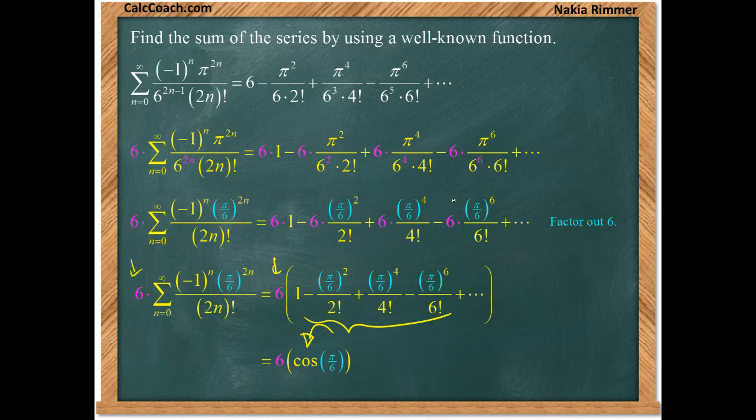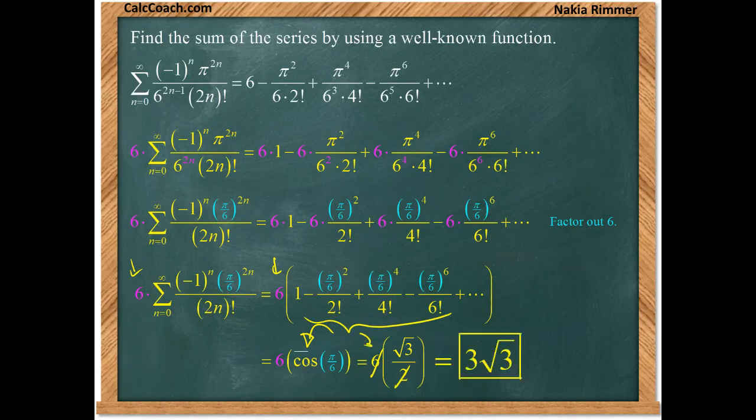So you go to your unit circle. You find out that pi over 6 has as its cosine root 3 over 2. But don't forget about the 6 that you conveniently needed in there and then that will cancel to give you a final answer of 3 root 3.